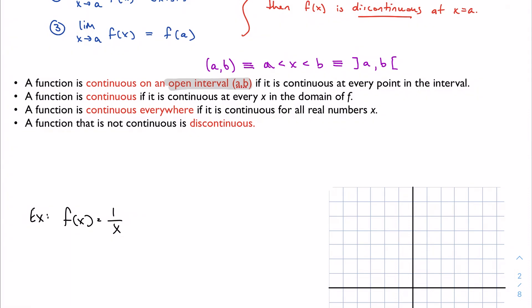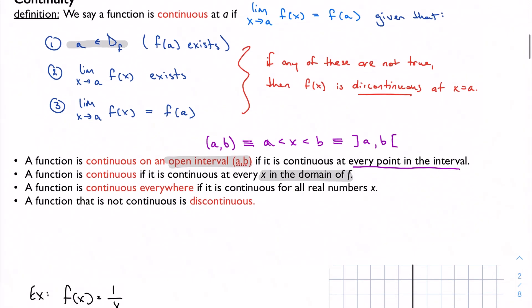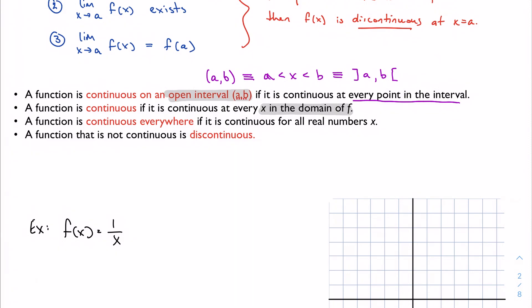A function is continuous on an open interval (a,b) if it is continuous at every point in the interval. It's continuous on this range of numbers if it's continuous on that range of numbers. The function is just continuous if it's continuous at every x in the domain of f. We say that the function is continuous everywhere if it is continuous for all real numbers. And if it's not continuous, it is discontinuous.